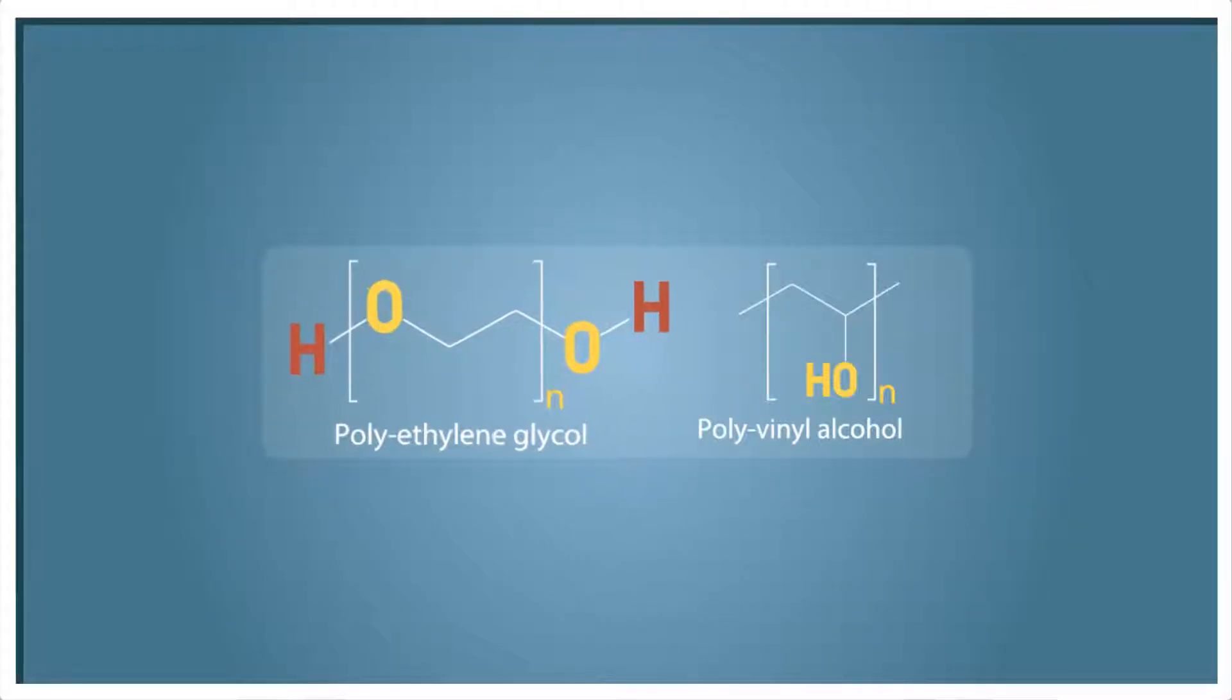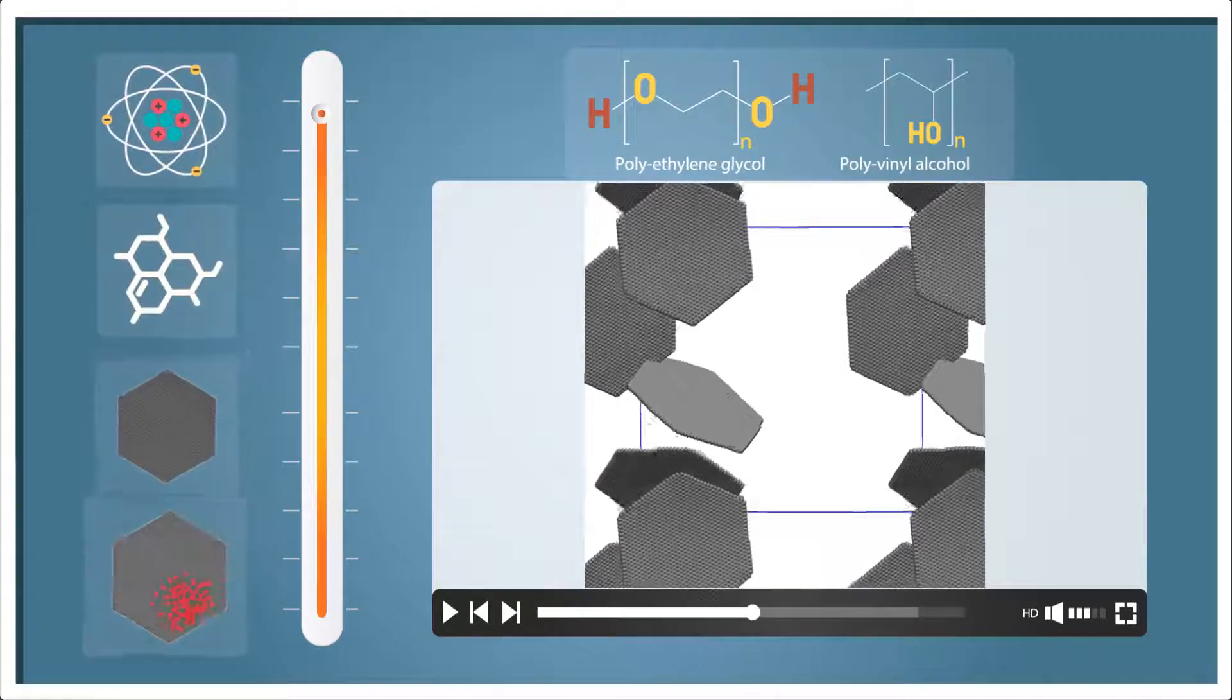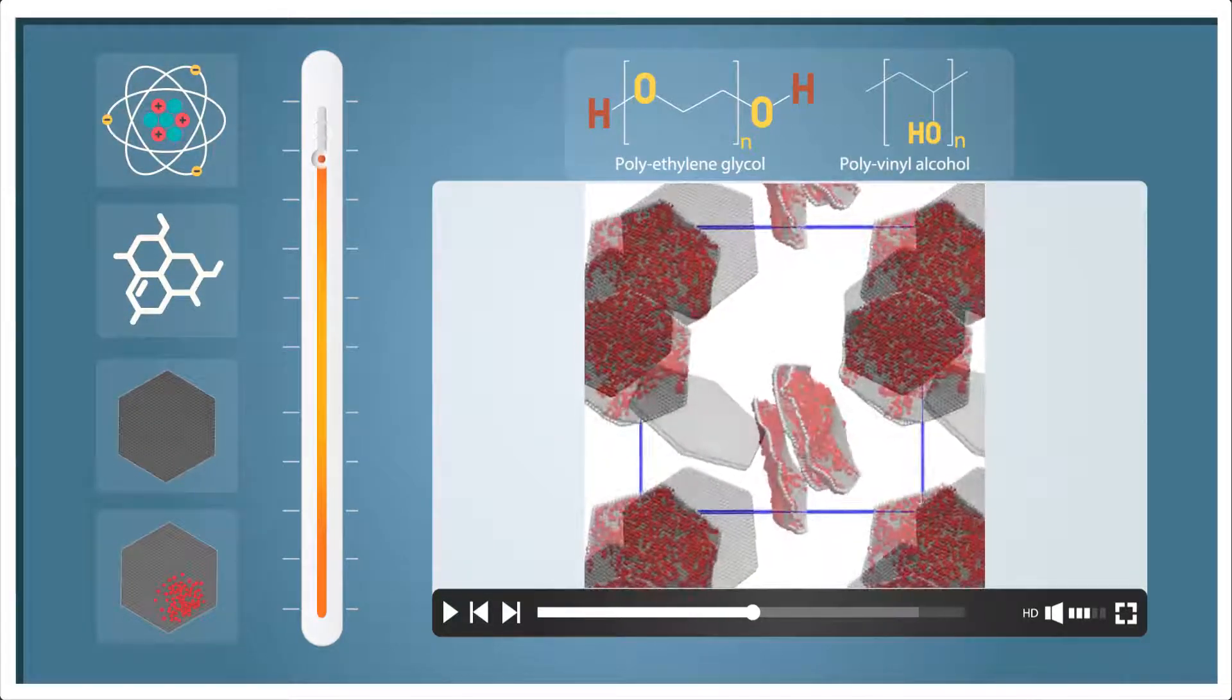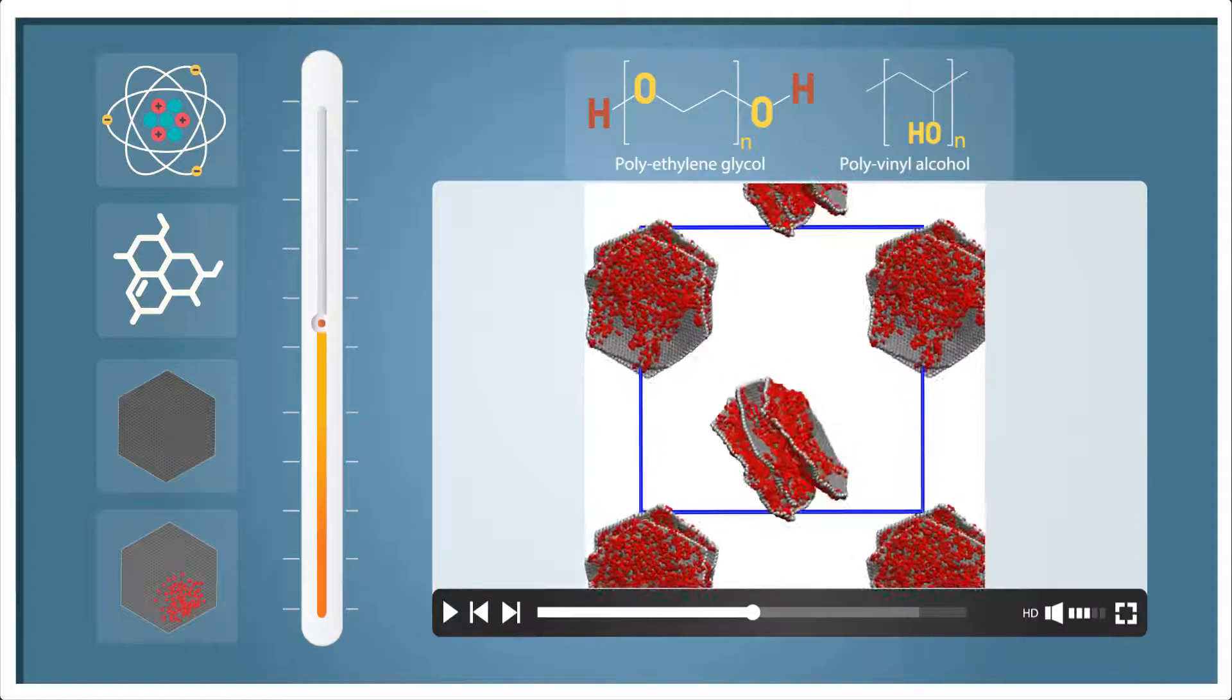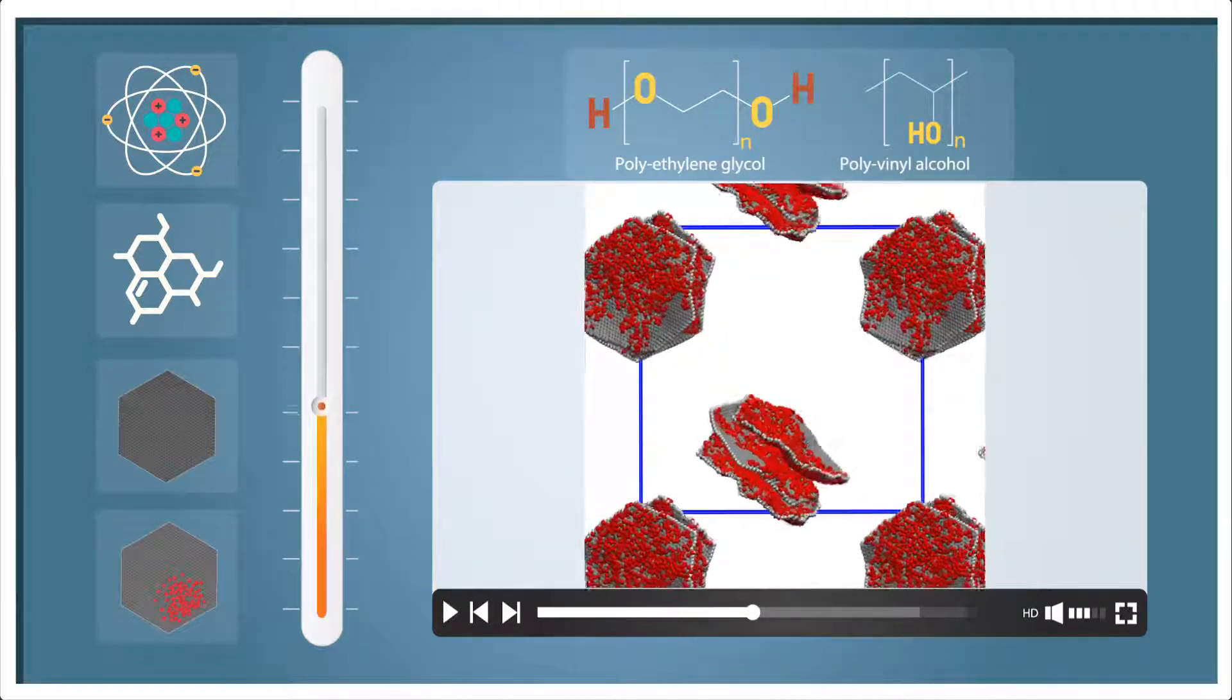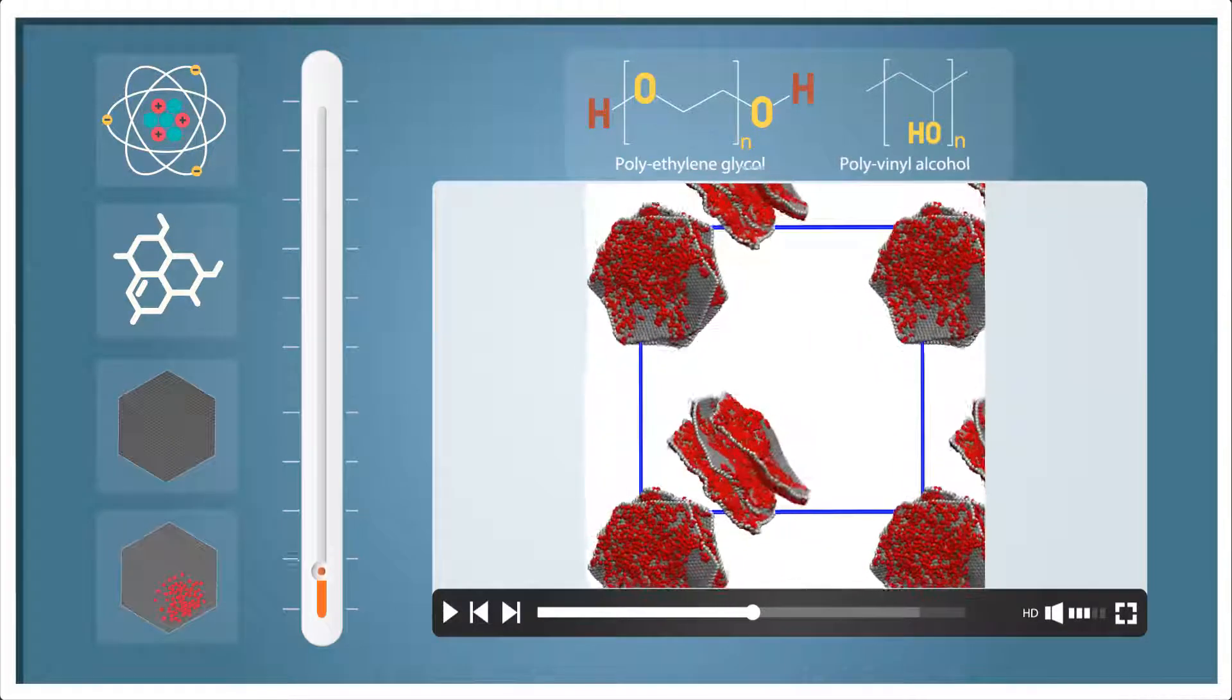Using two polymers, polyethylene glycol and polyvinyl alcohol, they conducted bottom-up simulations in which they observed how changes in the chemistry at the atomistic scale propagate up and ultimately shape the properties of graphene flakes and graphene oxide composites at much larger scales.